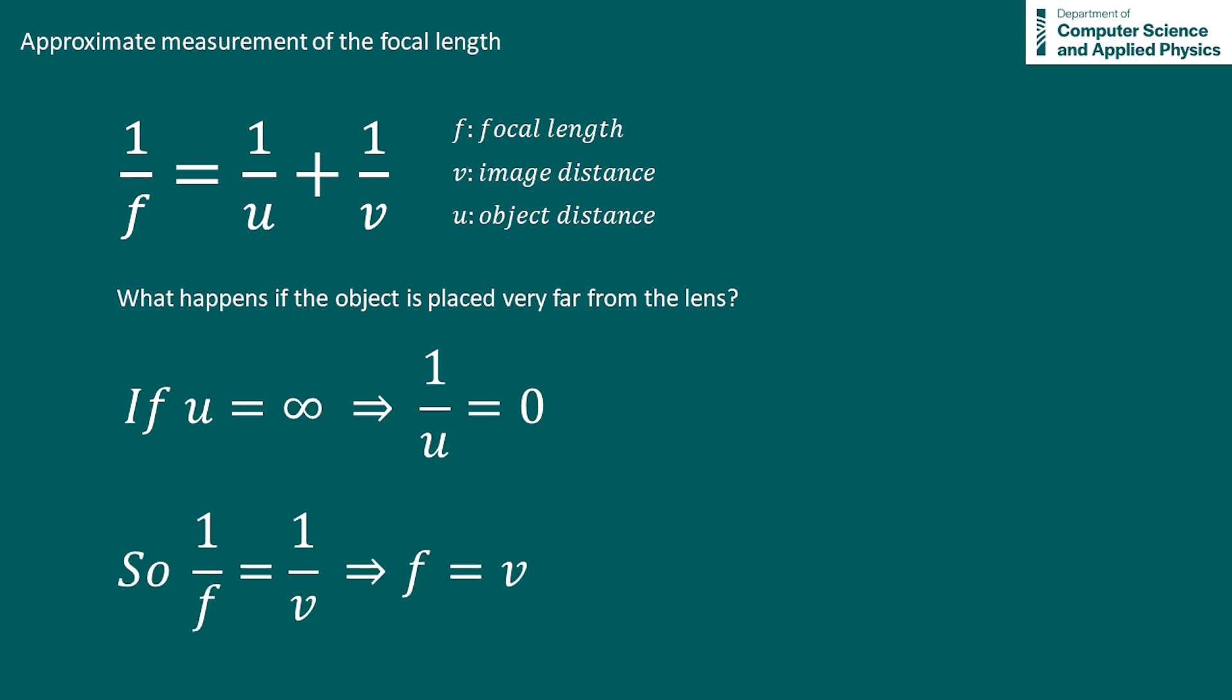So 1 over f equals 1 over v. The focal length is equal to the image distance. So if we have an object that's very far away from our lens and we can capture it on our screen, the image distance we measure is equal to the focal length of the lens.